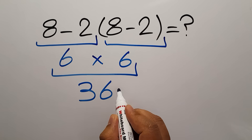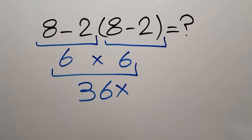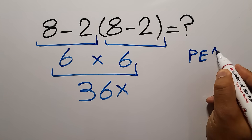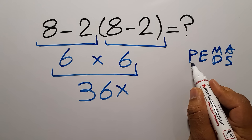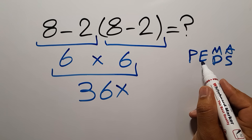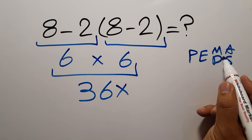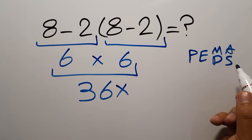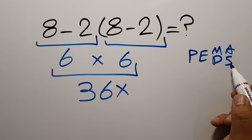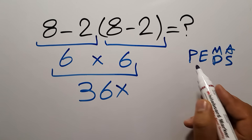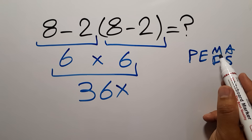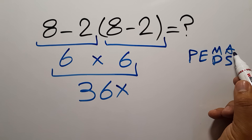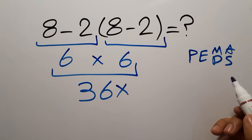But this answer is not correct. Because, according to the order of operations, which is PEMDAS: P stands for parentheses, E stands for exponents, M and D stands for multiplication and division, and A and S stands for addition and subtraction. First we have to do parentheses, then exponents, then multiplication or division, and finally addition or subtraction.